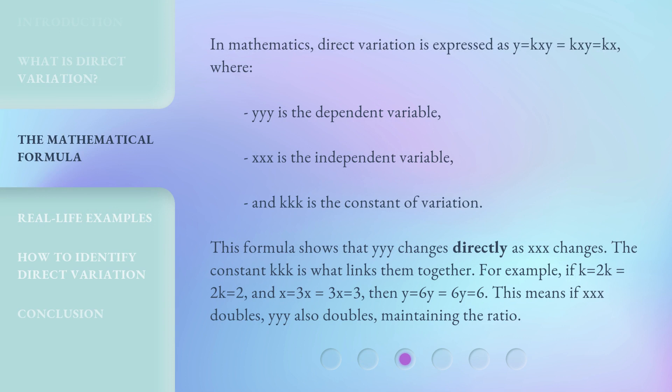In mathematics, direct variation is expressed as y = kx, where y is the dependent variable, x is the independent variable, and k is the constant of variation. This formula shows that y changes directly as x changes.